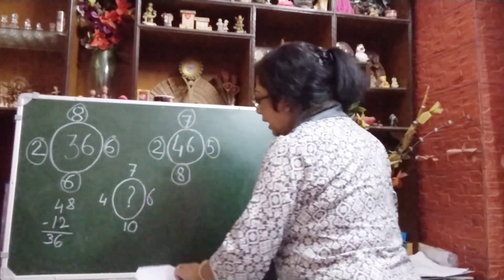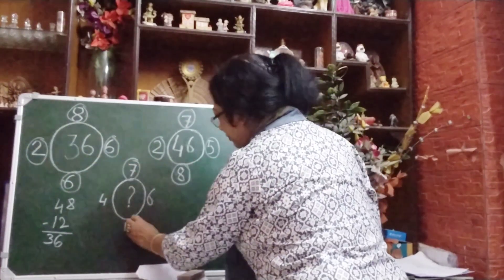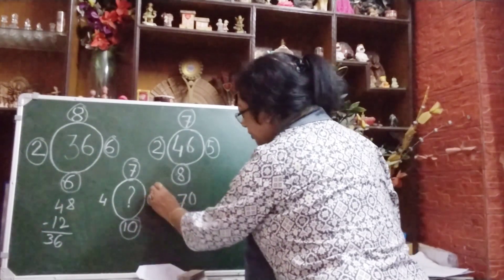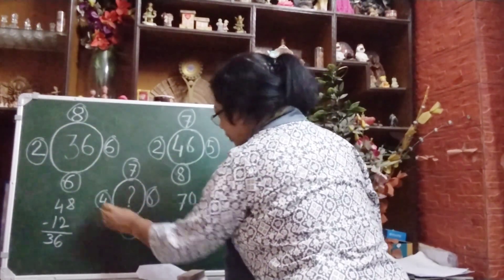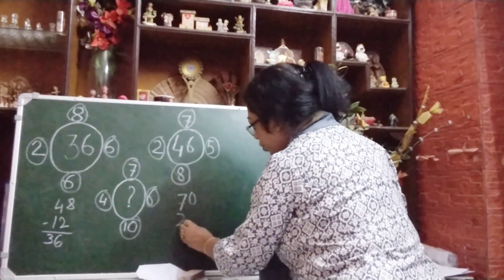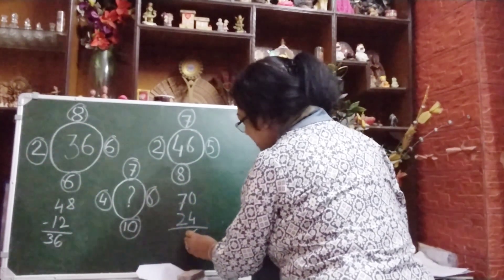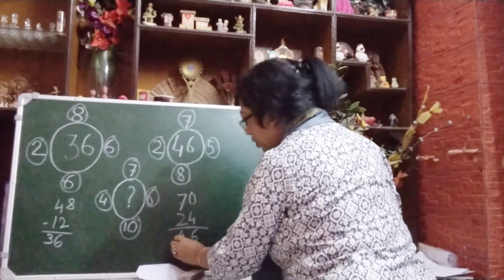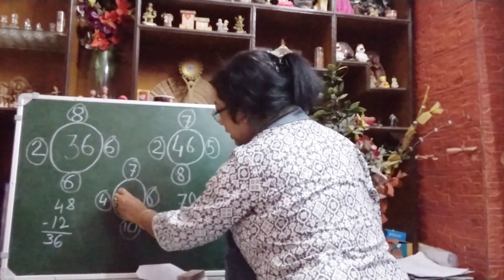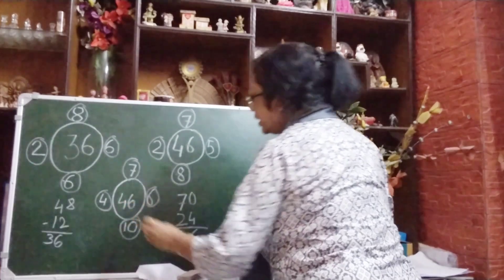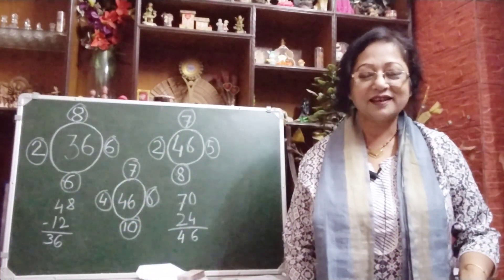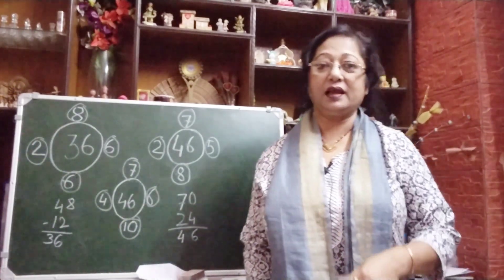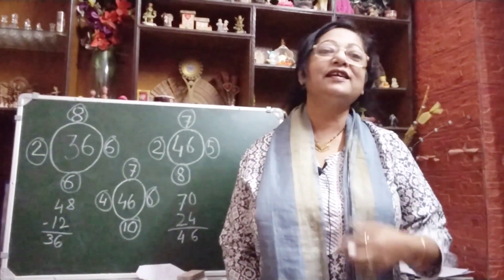Now applying this logic to find the missing number: first multiply 7 and 10 — that gives 70. Then multiply 6 and 4 — that gives 24. Subtracting: 70 minus 24 gives 46. So our required missing number is 46!